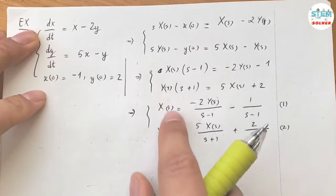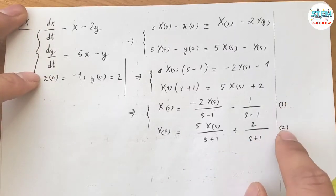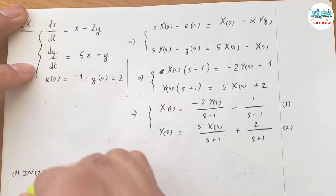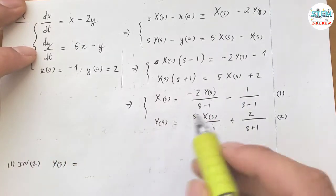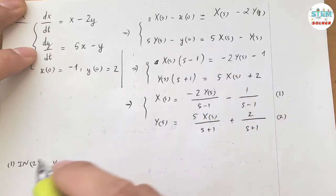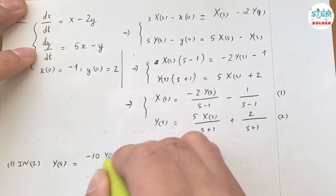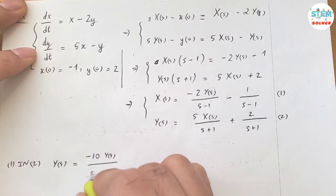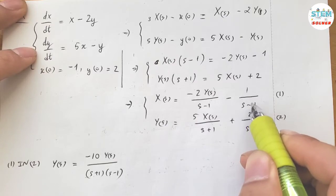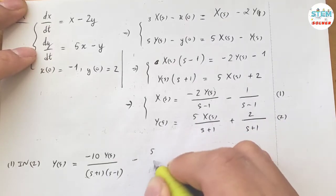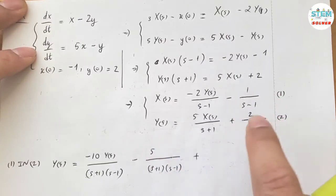The next step is to substitute one equation into the other and solve for the unknown. I'm going to substitute equation 1 into equation 2. So Y(s) equals 5 times negative 2, which is negative 10·Y(s) over (s plus 1)(s minus 1), minus 5 over (s plus 1)(s minus 1).